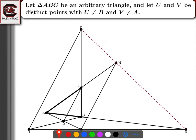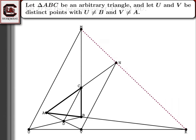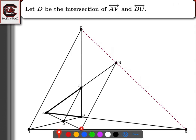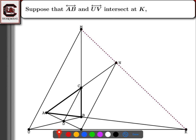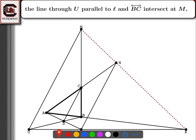We're given that triangle ABC is an arbitrary triangle, and U and V are points. We want to make sure U does not equal B and V does not equal A. D is going to be the intersection of lines AB and BU. I'm going to suppose D doesn't equal C — that was the other vertex of the triangle — and then I let L be the line through C and D. Also, AB and UV intersect at a point I'm calling K.